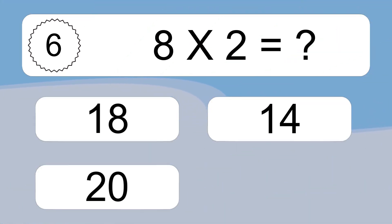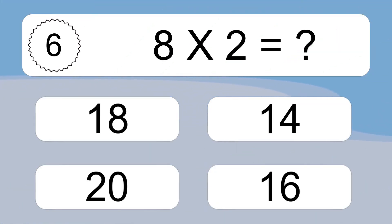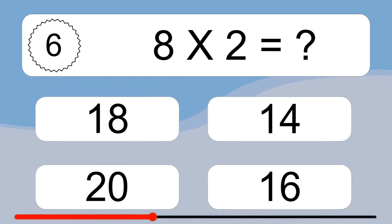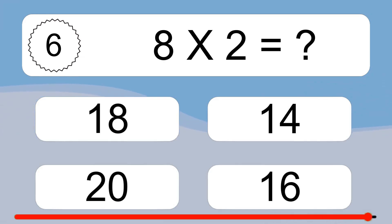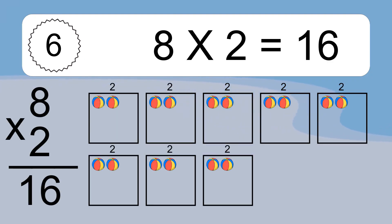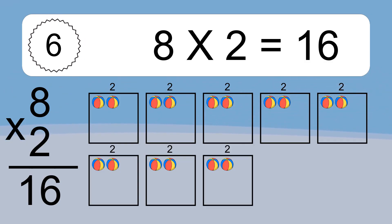8 times 2 equals what? 8 times 2 equals 16. We have 8 boxes, and each box has 2 colorful balls inside. If you count all the balls in all the boxes together, you will have 8 times 2 balls. This equals 16 balls.